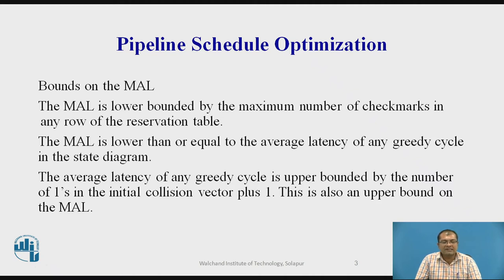The Greedy Cycle is a cycle whose edges are all made with minimum latencies from their respective starting states. The MAL, which is the Minimum Average Latency, is achieved by at least one of the Greedy Cycles which leads to the Minimum Average Latency.